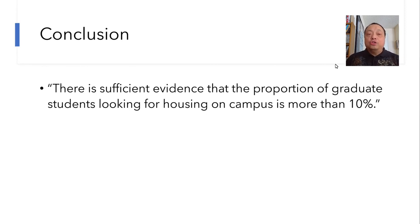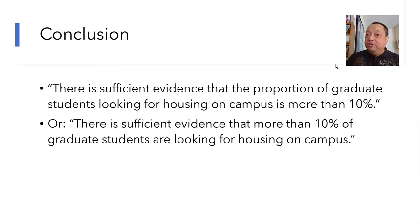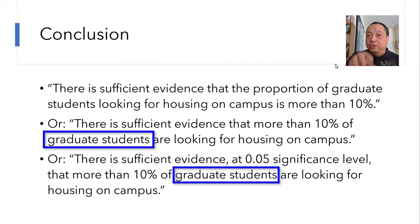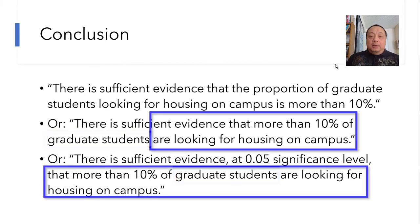You can also just copy verbatim from the question prompt and say, there is sufficient evidence that more than 10% of graduate students are looking for housing on campus. You see that the population of graduate students is in the conclusion. The fact that it's more than 10% looking for housing is in the conclusion. But the word proportion may not be, if you're just copying verbatim from the question prompt. But it's okay because the word proportion is implied in the more than 10%.